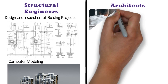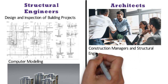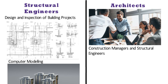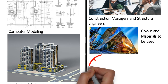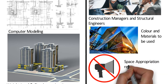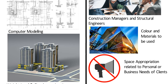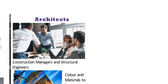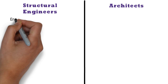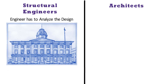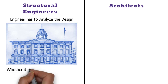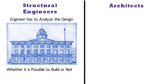An architect works with clients, construction managers and structural engineers to ensure that the original design of the project will come to fruition. Architects are directly concerned with building aesthetics, color and materials to be used, provides advice about strategies to reduce noise, space appropriation related to personal or business needs of clients and its overall functionality. Before the engineer can approve the architect's design, the engineer has to analyze the design and select materials that can safely uphold the structure. An engineer takes the blueprint presented by an architect and determines whether it is possible to build or not and what are the best materials to use.